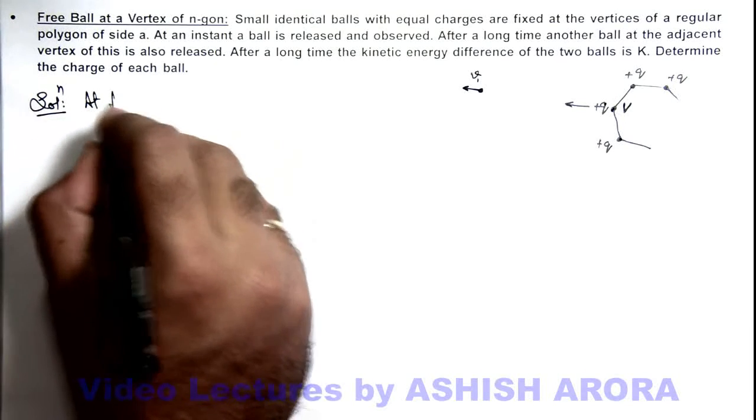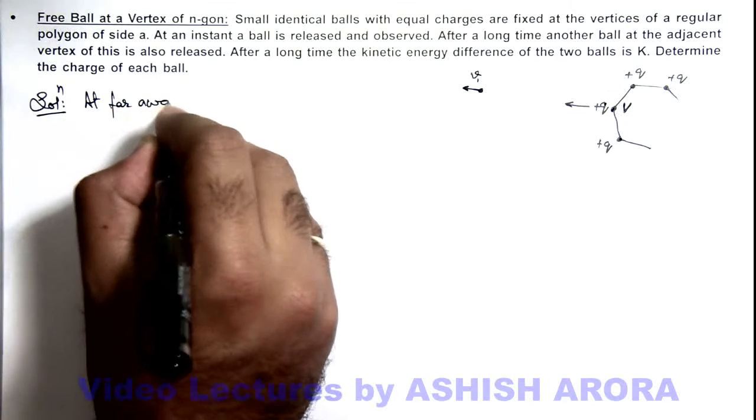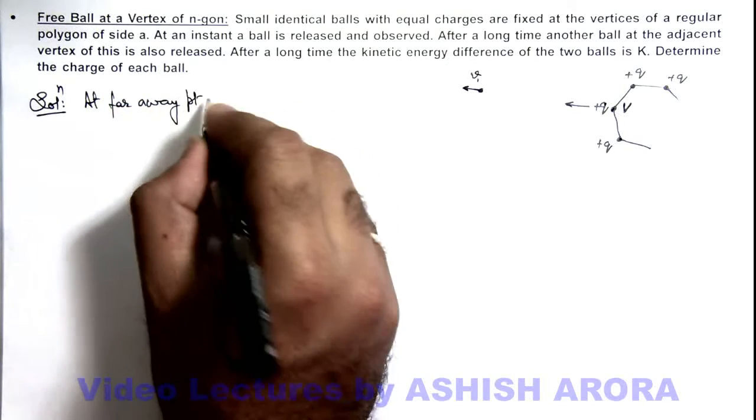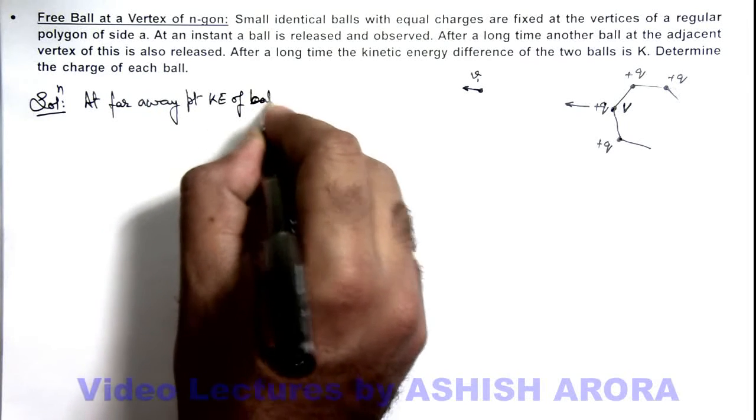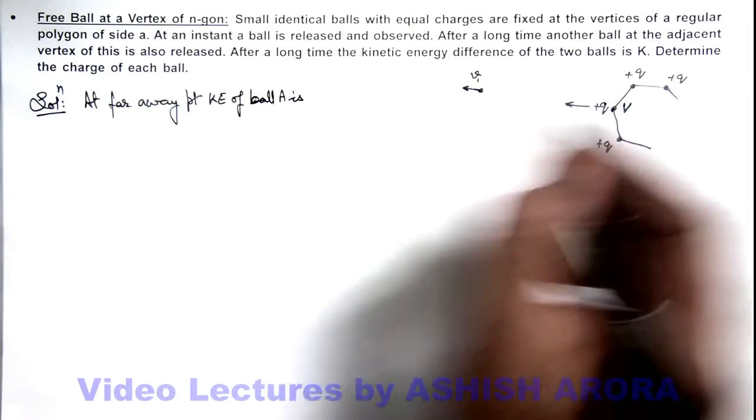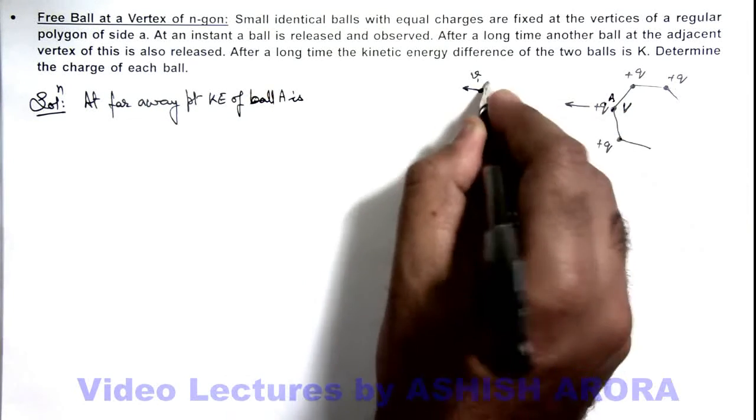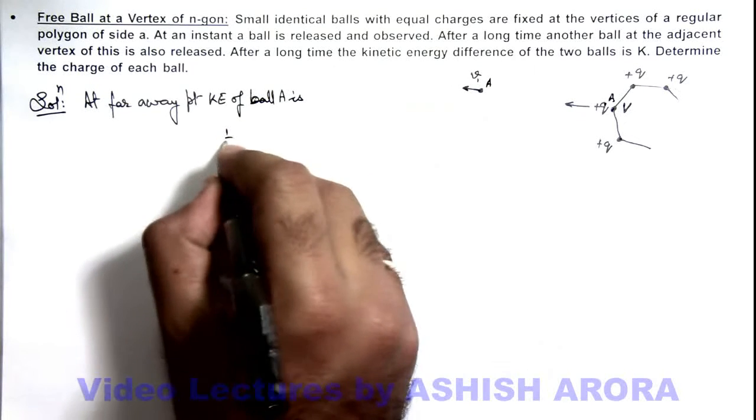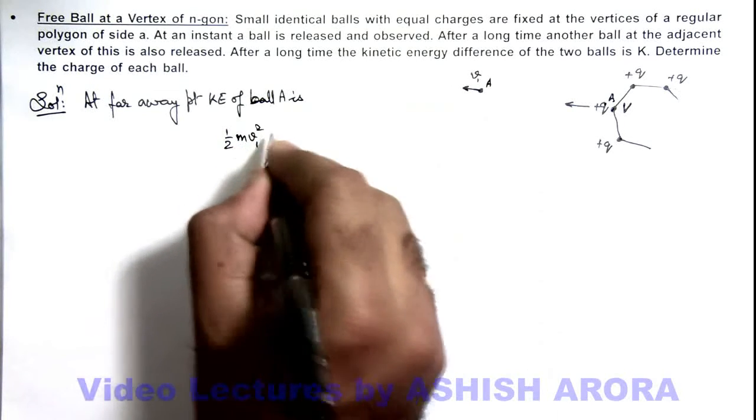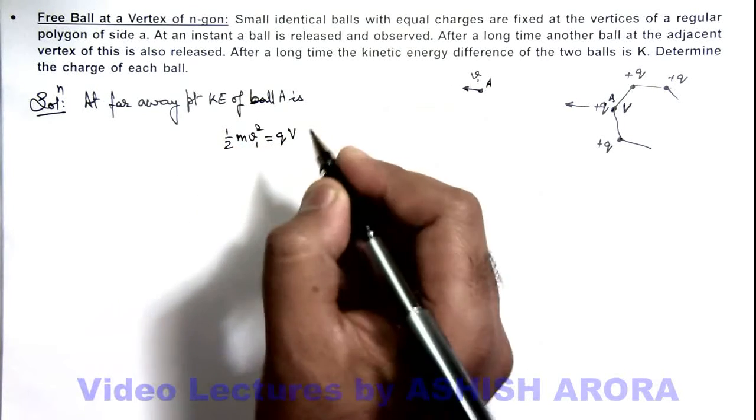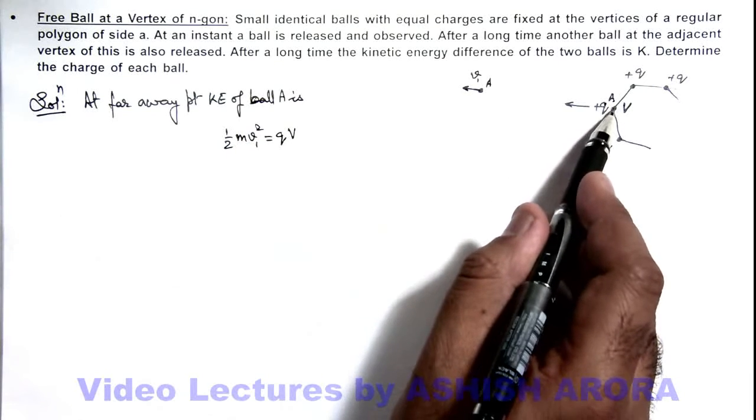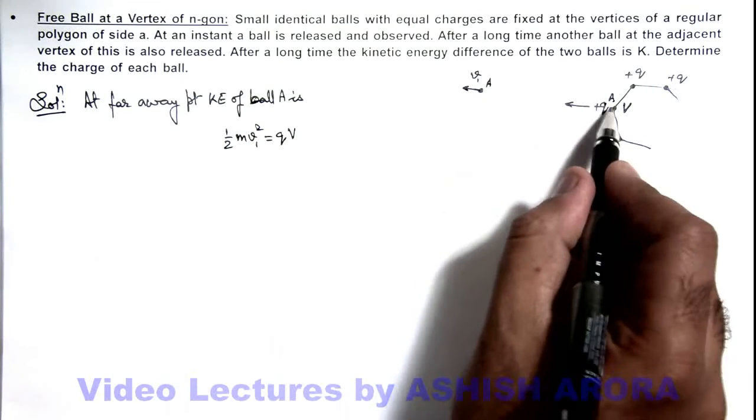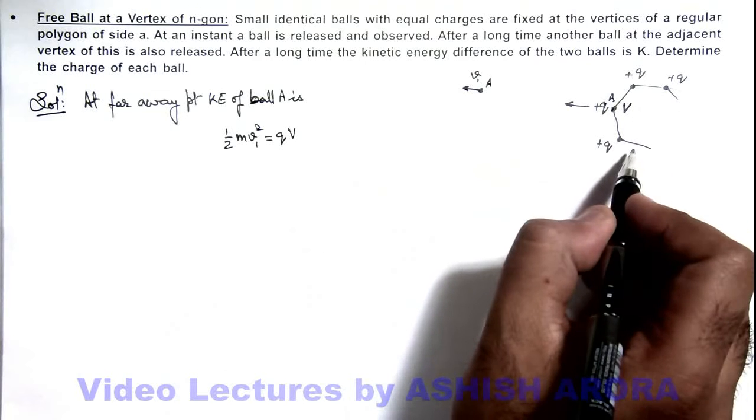Kinetic energy of ball A - here I am naming this ball as ball A - this can be given as ½mv₁² which is equal to qv, because qv was the interaction potential energy of the ball at this point where v is the potential at this point due to all other n-1 balls.